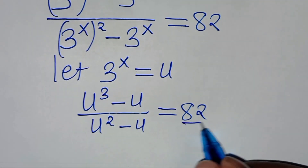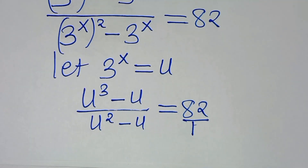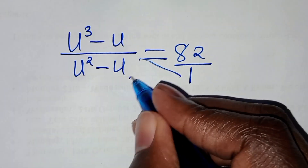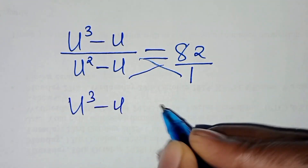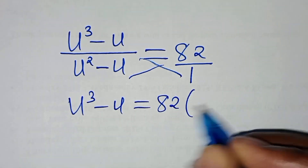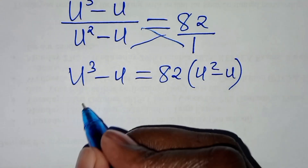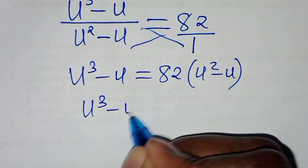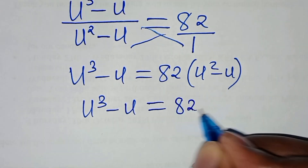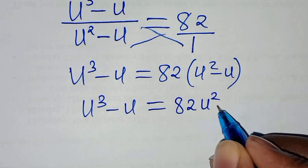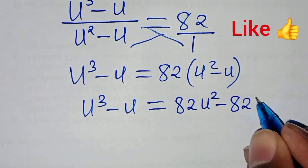Since 82 equals 82 over 1, we can cross multiply. So we have u to the power of 3 minus u equals 82 times u squared minus u. Expanding the right-hand side gives 82u squared minus 82u.